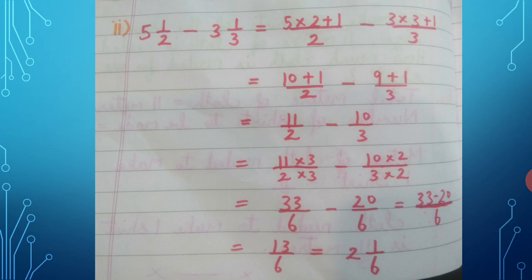Cross multiply: 11 × 3 upon 2 × 3, minus 10 × 2 upon 3 × 2. This gives 33 upon 6 minus 20 upon 6.